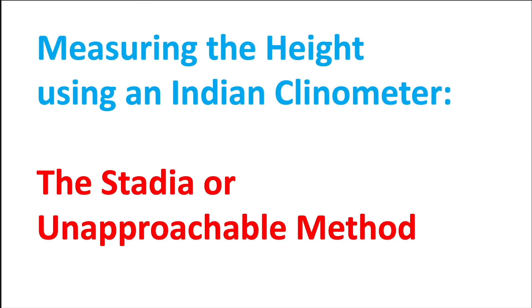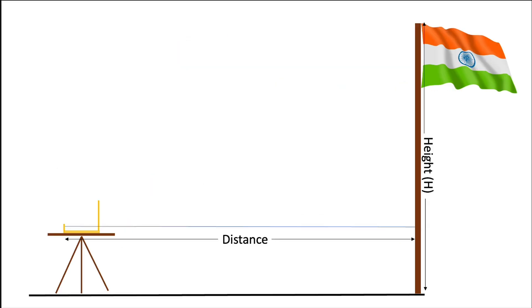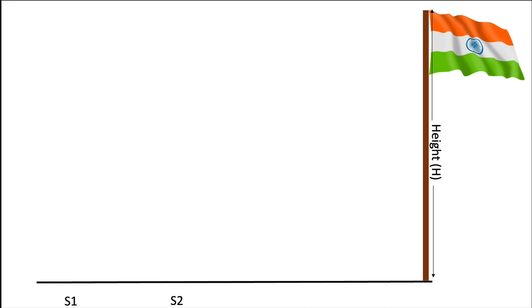Measuring height using an Indian Clinometer: the stadia or unapproachable method. To do this, we need to set up the Indian Clinometer not once but twice, at points S1 and S2.